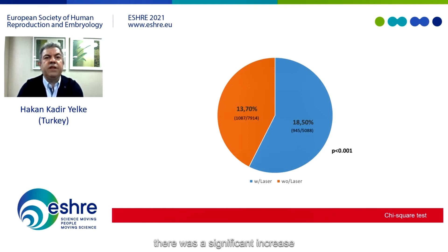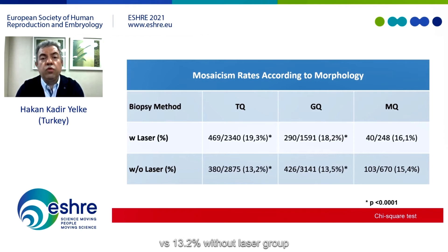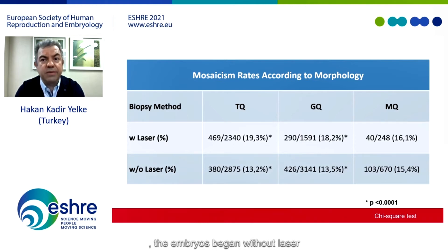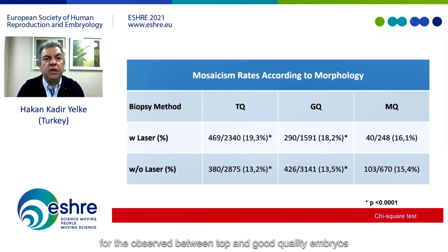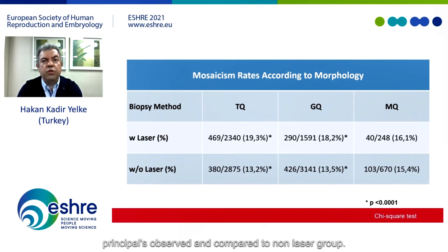There was a significant increase in mosaicism rate with the usage of laser in trophectoderm biopsies. When mosaicism rates were examined by embryo quality, the rate was 19.3% in the laser group versus 13.2% in the without-laser group, and similarly 18.2% versus 13.5% in top and good quality embryos. A high level of significance was observed for top and good quality embryos. Regarding the moderate group, although there was a tendency toward increased mosaicism with laser, no statistical difference was observed compared to the non-laser group.